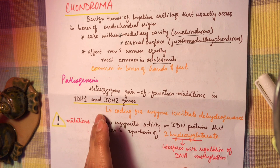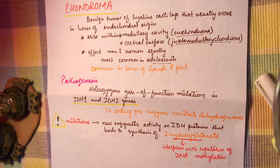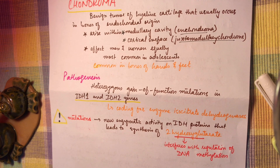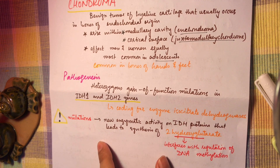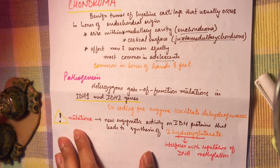The pathogenesis of chondroma involves heterozygous gain-of-function mutations in the IDH1 and IDH2 genes, which encode the enzymes isocitrate dehydrogenases. These mutations are identified from both syndromic and solitary enchondromas — the solitary type occurring alone, and the syndromic type presenting with many other symptoms.